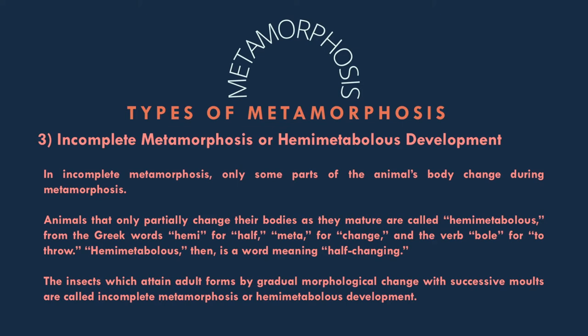In many insects like dragonflies, mayflies, and damselflies, the different stages of the life cycle resemble parometabolous development except the nymphs, which are called naiads, are aquatic and respire by external gills, but the adults are terrestrial. The best example is the mayfly, where the adult stage lasts only for a day but nymphs take one year to grow.